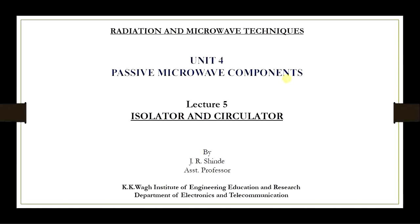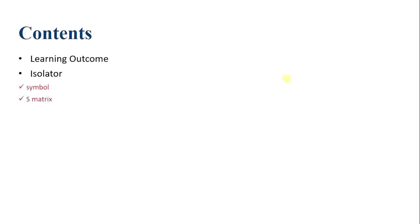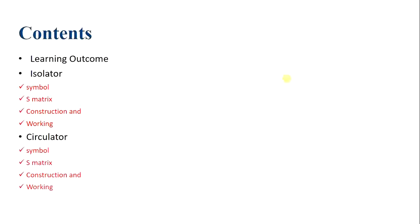Welcome to the video lectures on coarse radiation and microwave techniques. We are going through unit 4, that is passive microwave components, and this is lecture 5, in which we will see two more ferrite devices — the isolator and the circulator. The contents we will cover include: for the isolator, its symbol, S-matrix, construction and working; and for the circulator, its symbol, S-matrix, construction and working.